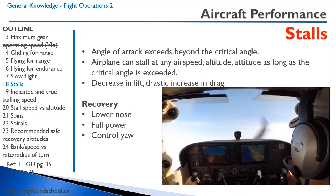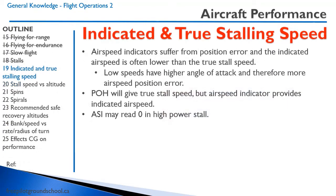To recover from a stall, lower the nose, add full power, and control yaw to keep the nose straight. Airspeed indicators suffer a position error at high angles of attack — the pitot tube is angled and less air enters it, so indicated airspeed reads lower than true stall speed. The POH gives the true stall speed. During a high-power stall you may even see the airspeed indicator read zero because almost no air is reaching the pitot tube.